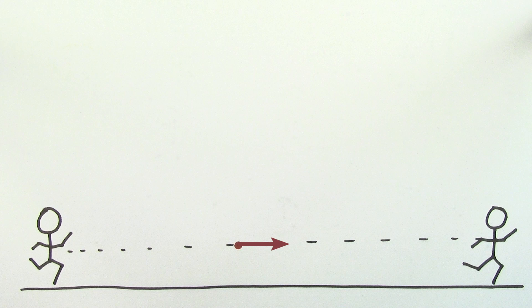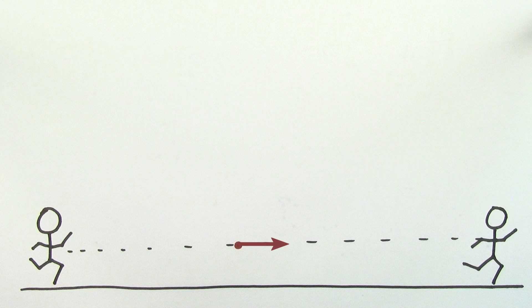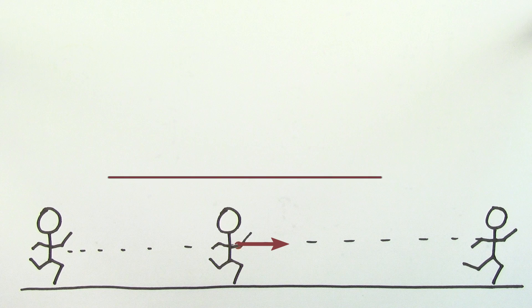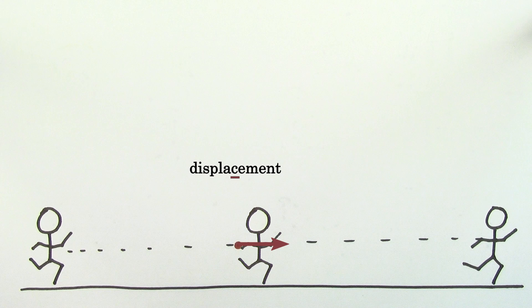But we're going to run into a problem here, because if you want to find a perfect value for the instantaneous velocity, you'd have to take an infinitesimally small displacement divided by an infinitesimally small time interval. But that's basically zero divided by zero, and for a long time, no one could make any sense of this.